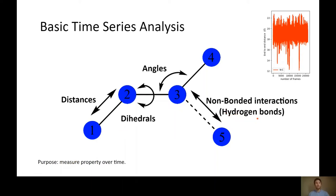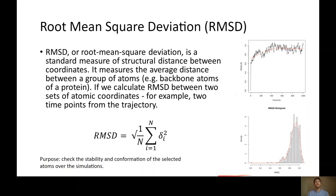RMSD (root mean square deviation) is a standard measure of structural distance between coordinates, measuring the average distance between a group of atoms — for example backbone atoms of a protein. It is used to check stability and conformation of selected atoms over a simulation. In Galaxy, the RMSD tool produces both a time series and a histogram. If the histogram shows a single peak, the protein has one stable conformational state. Multiple distinct peaks would indicate multiple states worth investigating.